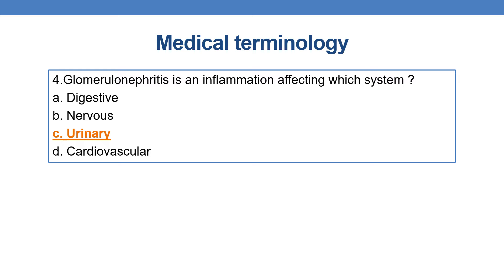Next question: glomerulonephritis is an inflammation affecting which system? Glomerulonephritis — glomerulus combined with nephro, which means related to kidney. So glomerulonephritis is an inflammation affecting the urinary system. Option C is the correct answer.